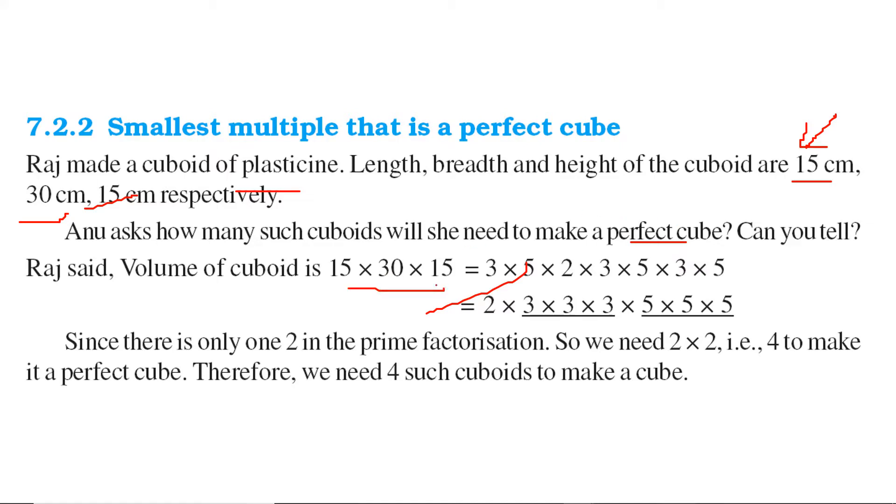15 into 30 into 15 is the volume of the cuboid. Now let us try to find the prime factors. So 15 is 3 into 5. 30 is nothing but 2 into 3 into 5. 15 is again 3 into 5.